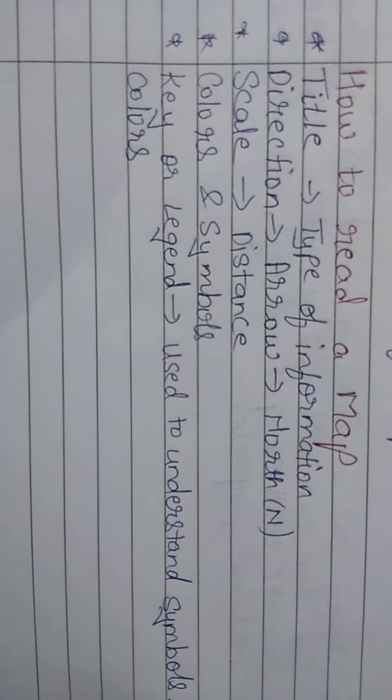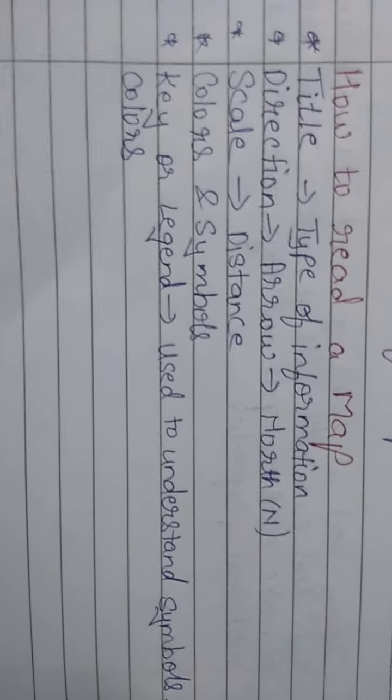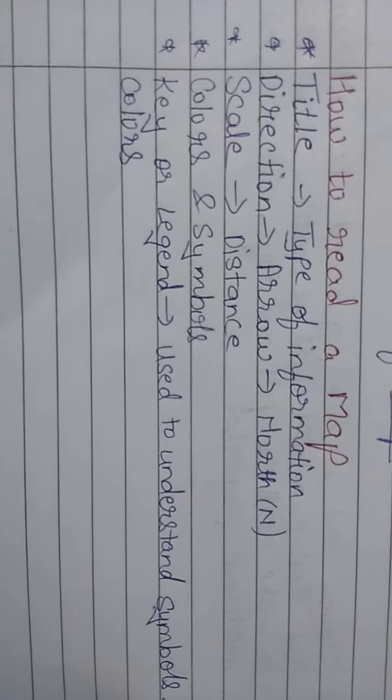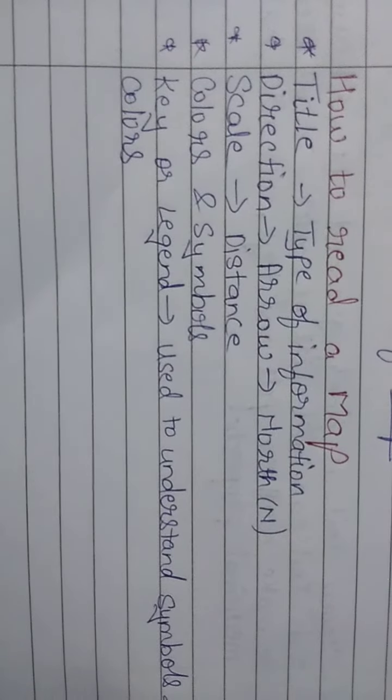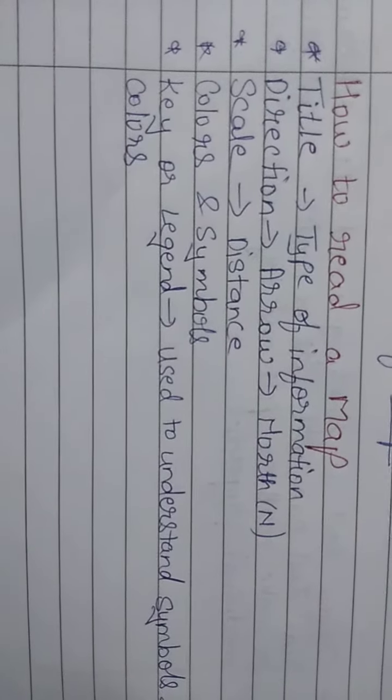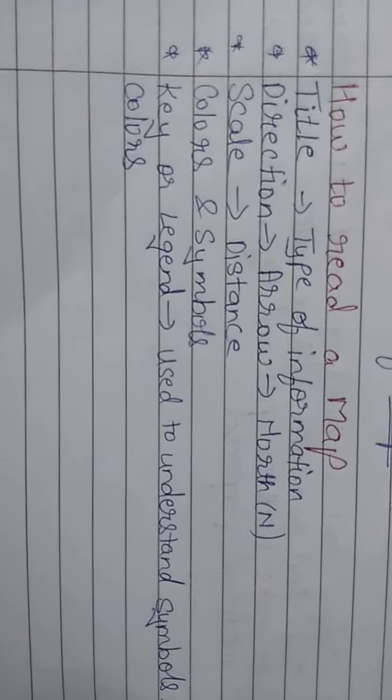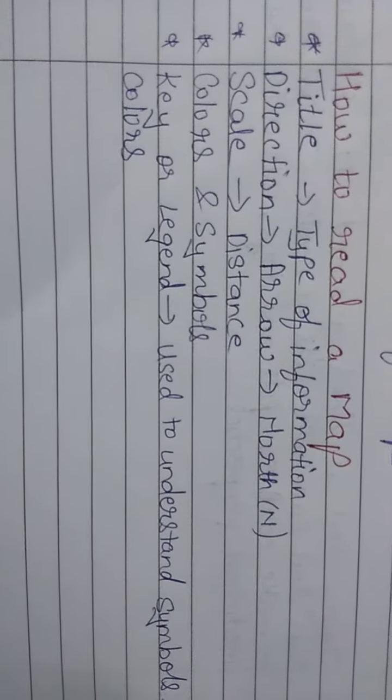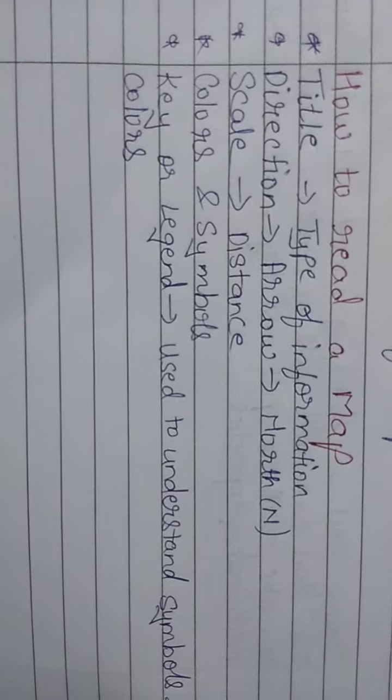Second comes the direction. On the map, there is an arrow you will see which points towards the north. We have studied direction, so we know what is north. On the map, you will see an arrow that points towards the north, and it is represented by the letter N, capital N.